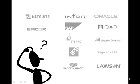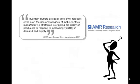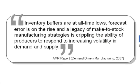But wait a minute — most companies have modern ERP products. How can the planning systems be broken? In order to answer this question, let's look at an AMR research conclusion from 2007. In that conclusion, they stated that inventory buffers are at all-time lows, forecast errors are on the rise, and a legacy of make-to-stock manufacturing strategies is crippling the ability of producers to respond to increasing volatility in demand and supply.